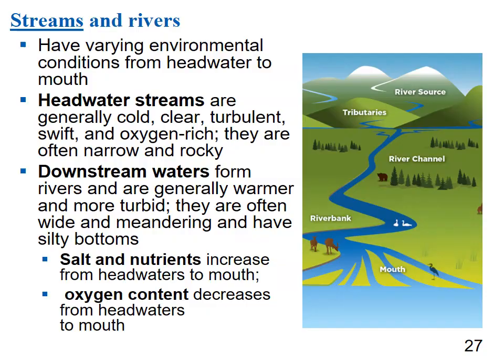Streams and rivers have varying environmental conditions from headwater to mouth. Headwater streams are generally cold, clear, turbulent, swift-moving, oxygen-rich, narrow, and rocky. Downstream, rivers are generally warmer and more turbid — turbid meaning cloudy with suspended particles — often wide and meandering with silty bottoms. Salt and nutrients increase from headwaters to mouth, while oxygen content decreases.